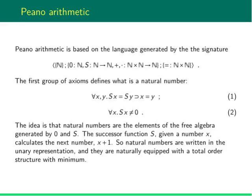The first group of axioms tells that the successor is injective and zero is not the successor of some number. The idea behind these axioms is that naturals are inductively generated as the free algebra over zero and the successor.